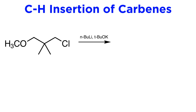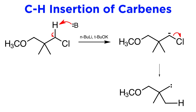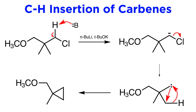Here is another example involving a substrate treated with the butyllithium tert-butoxide superbase. This reagent is so basic that we can deprotonate at a specific location to get a carbanion, after which chloride will leave to produce a carbene. This will perform C-H insertion with one of the methyl groups, producing a three-membered ring. So as we can see, this is an interesting technique with wide application.